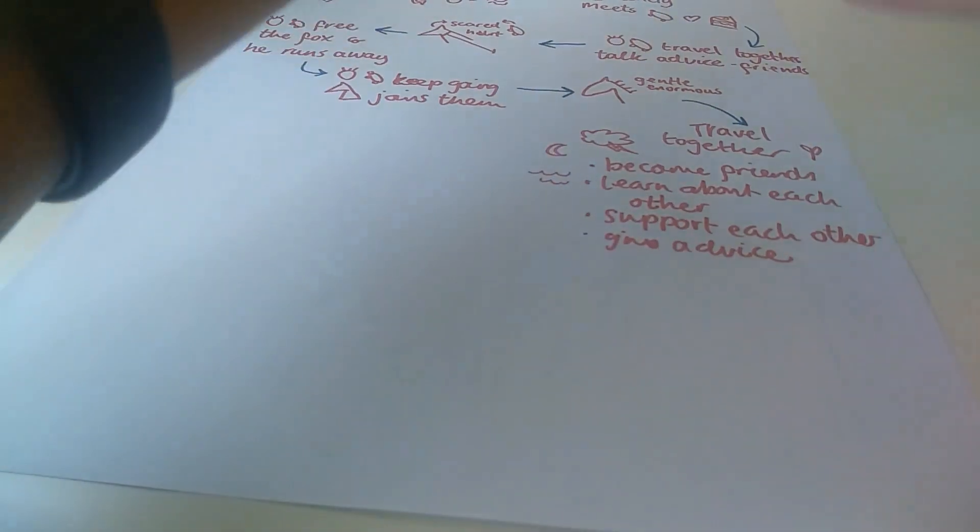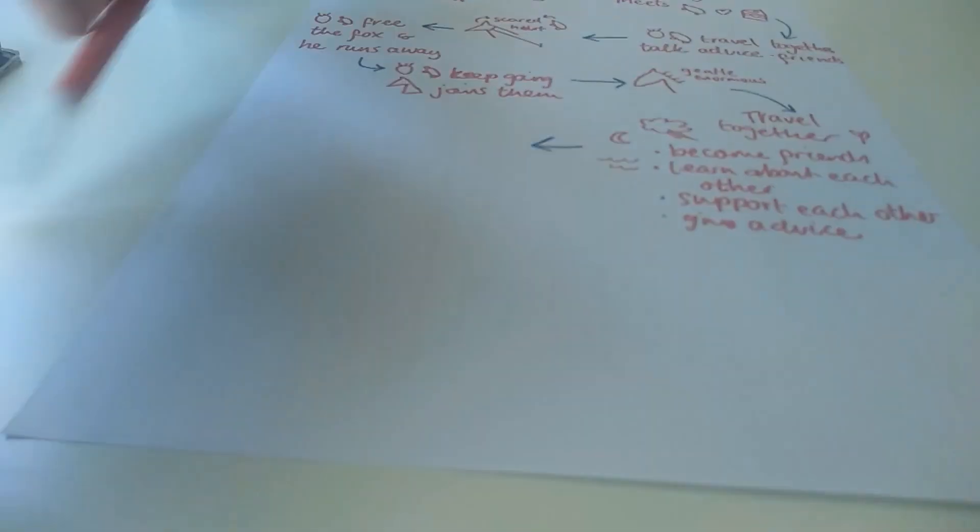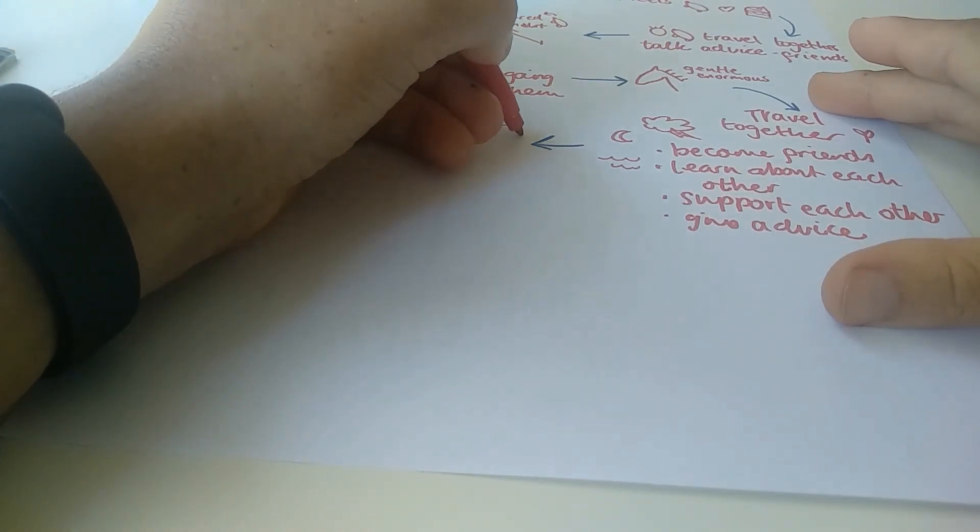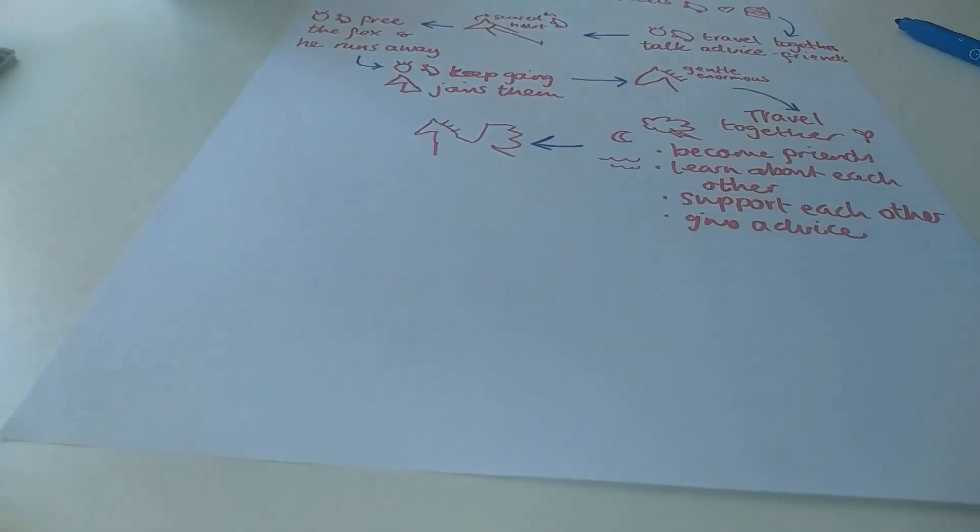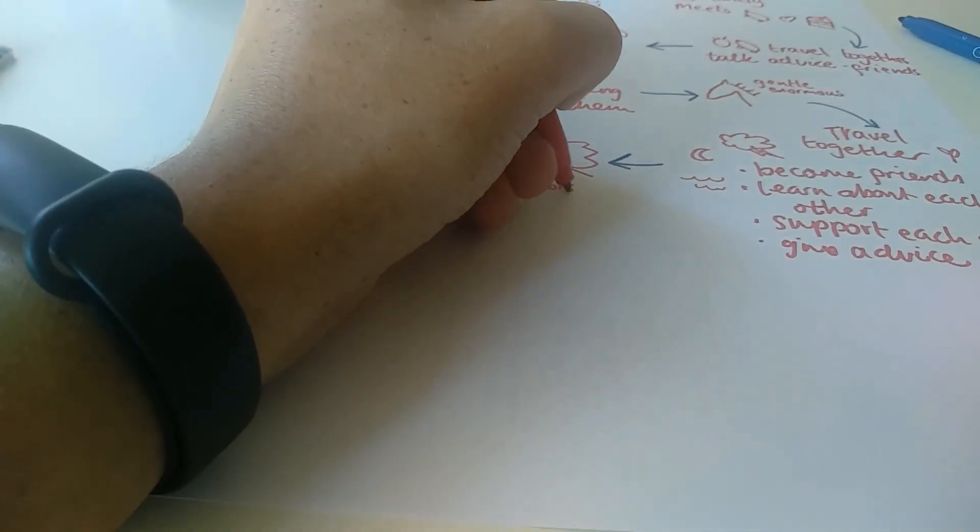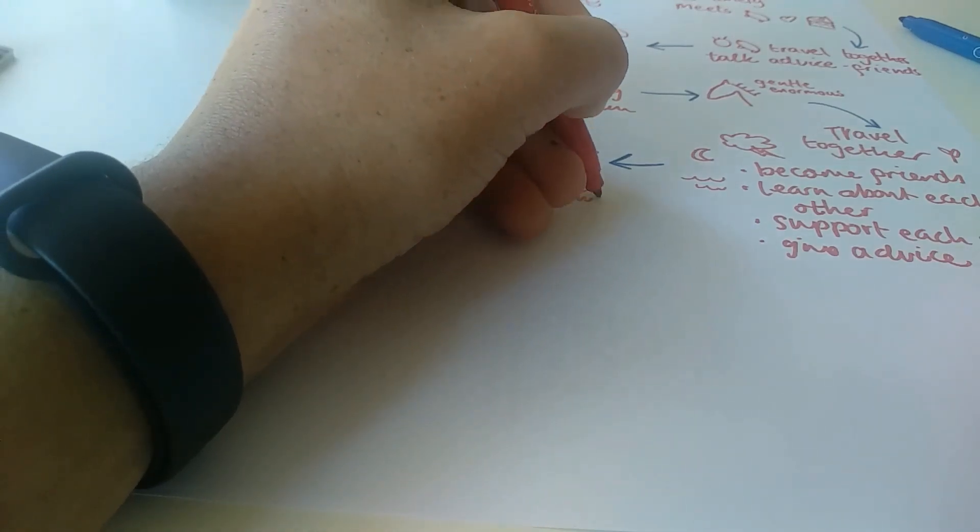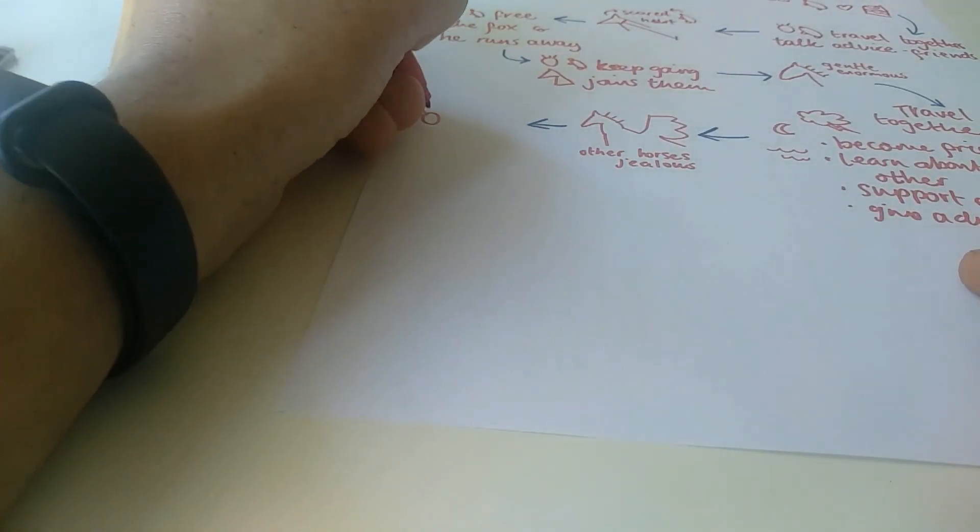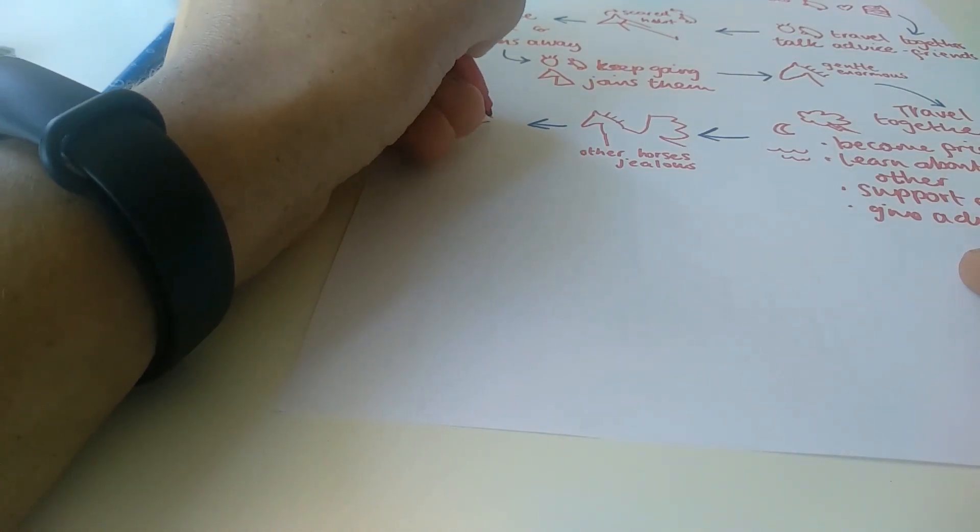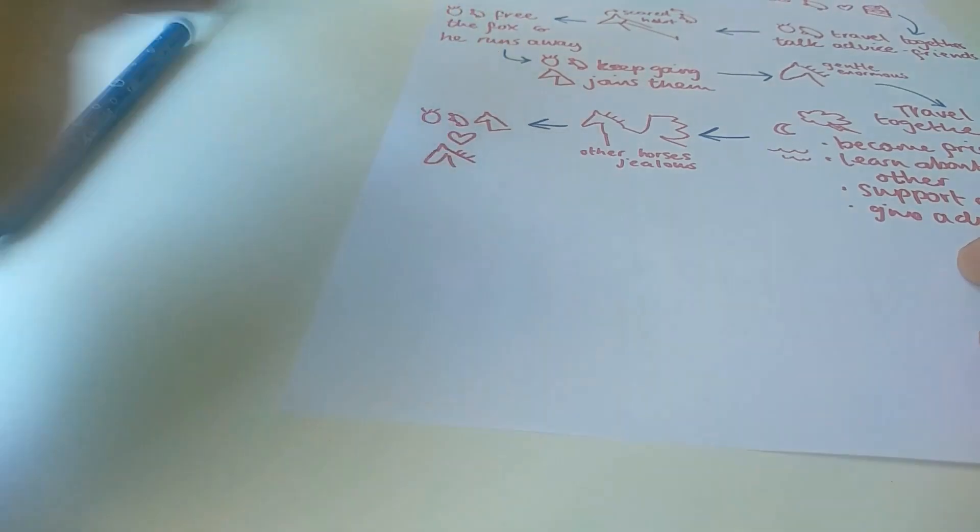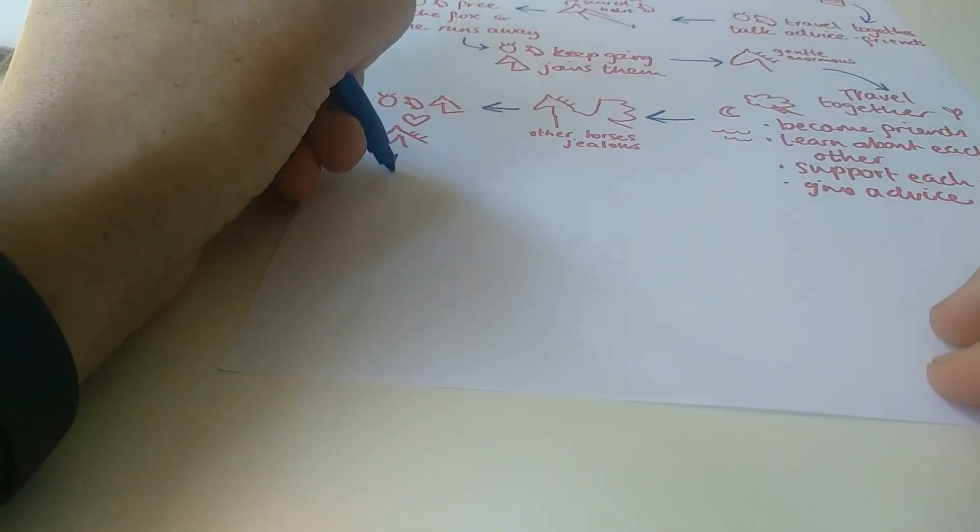And the horse reveals something to them all after a while. The horse tells them that he can fly. But they made the other horses jealous. So, I'm just going to write that other horse was jealous to remind myself of why the horse hid its wings. But the boy, the mole, and the fox all say that they love the horse anyway, whether or not it can fly. So, they take off and go flying around, which is nice. The horse is actually a pegasus.